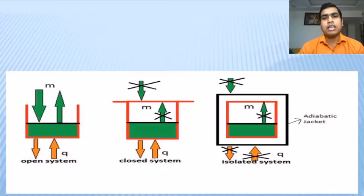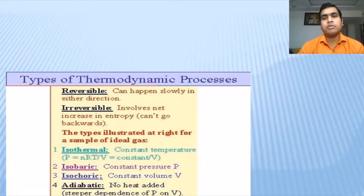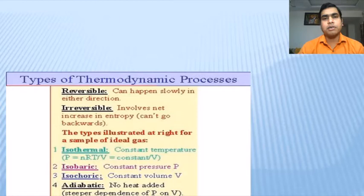In our next slide, we will see what are the different thermodynamic processes that are possible. In thermodynamics, there are many different processes: isothermal process, adiabatic process, isobaric process, isochoric process, and reversible process as well as irreversible process. These are some thermodynamic processes that are possible.